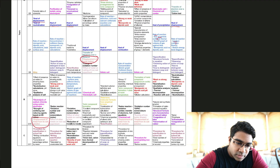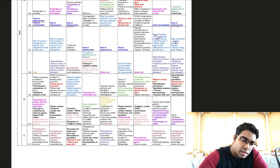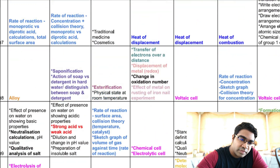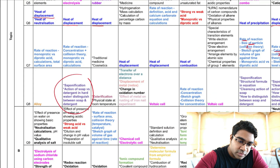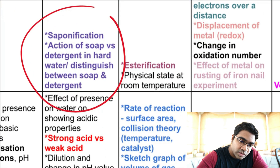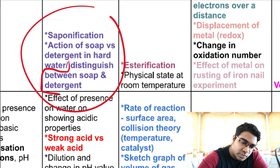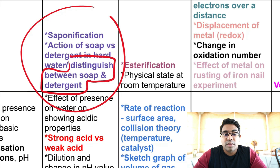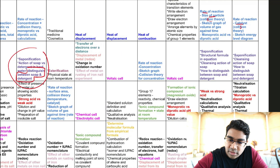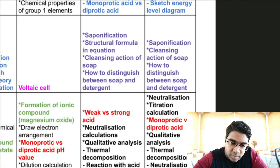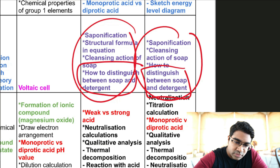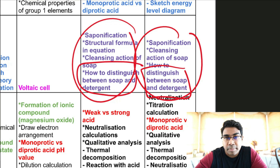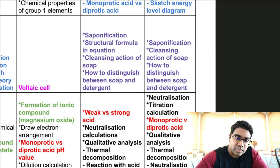Another topic that keeps coming out is saponification — it has a mixture between Section A and B. We have the action of soap, and interestingly, how to distinguish between soap and detergent. Please look into that — it has come out in two states. The method involves using hard water, soap, detergent, and water in the lab.